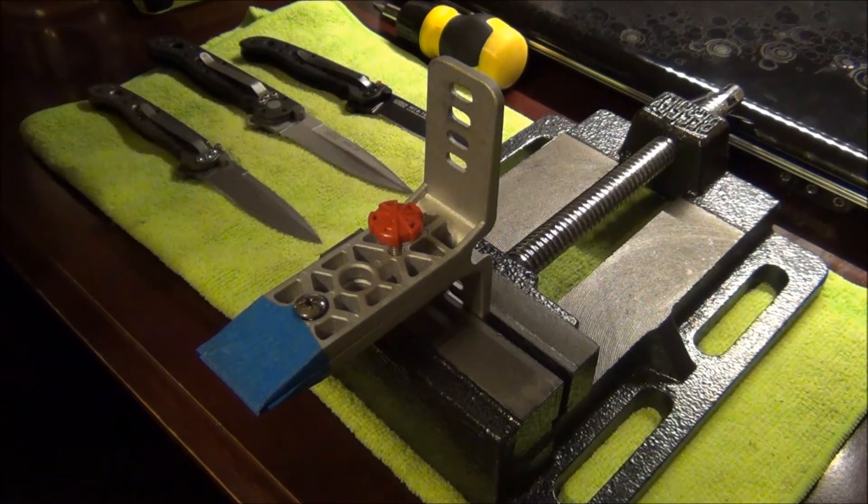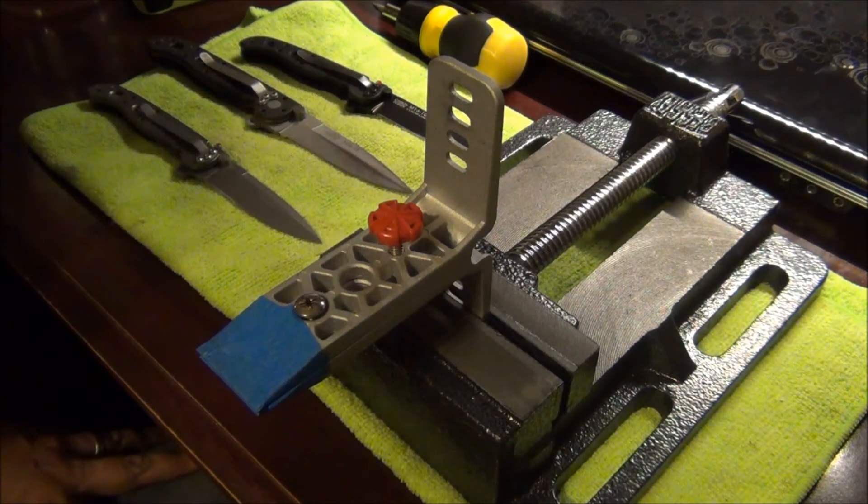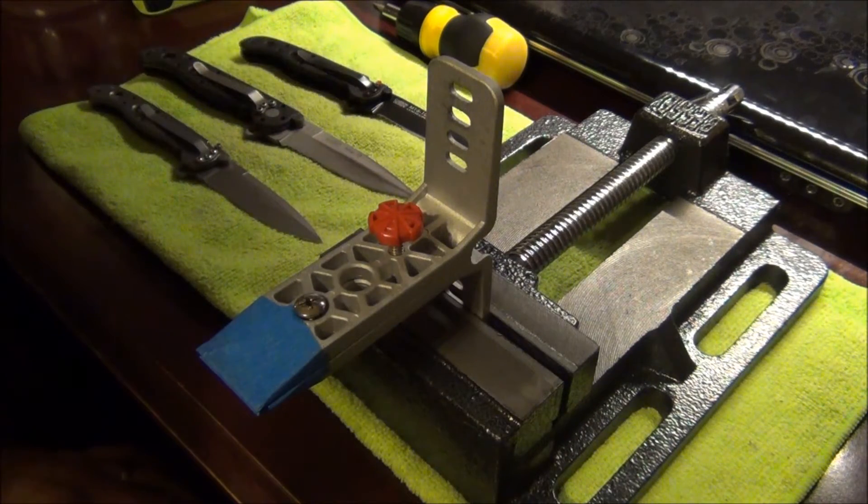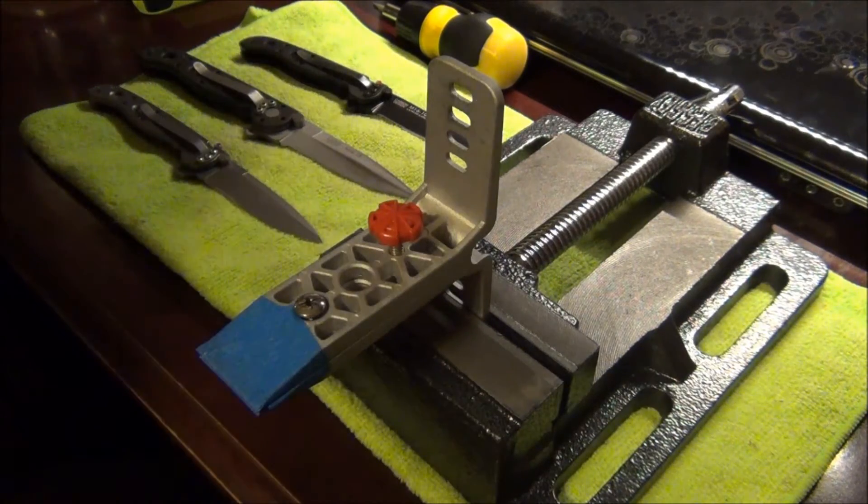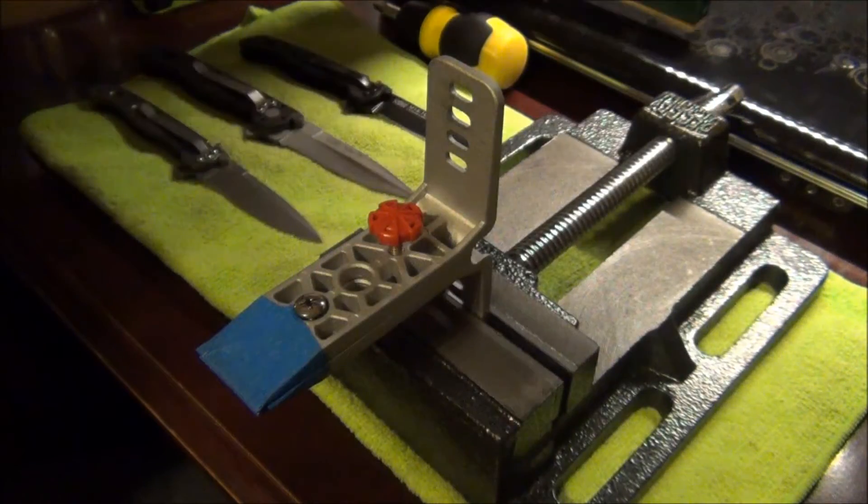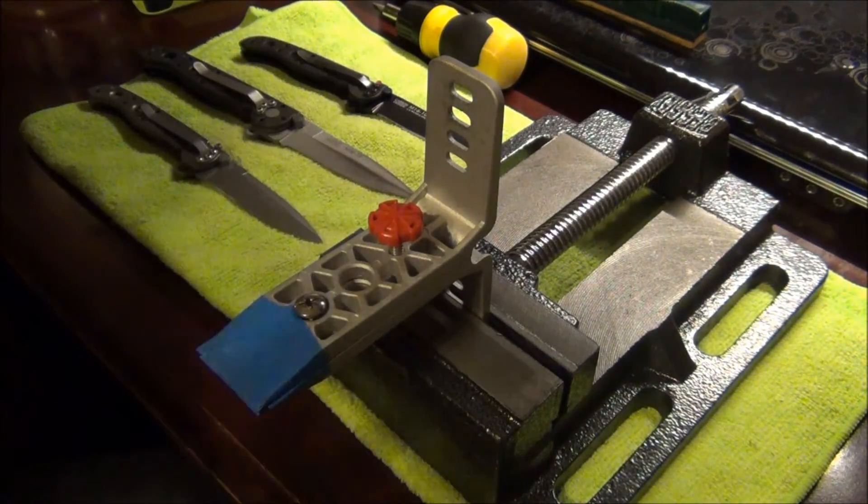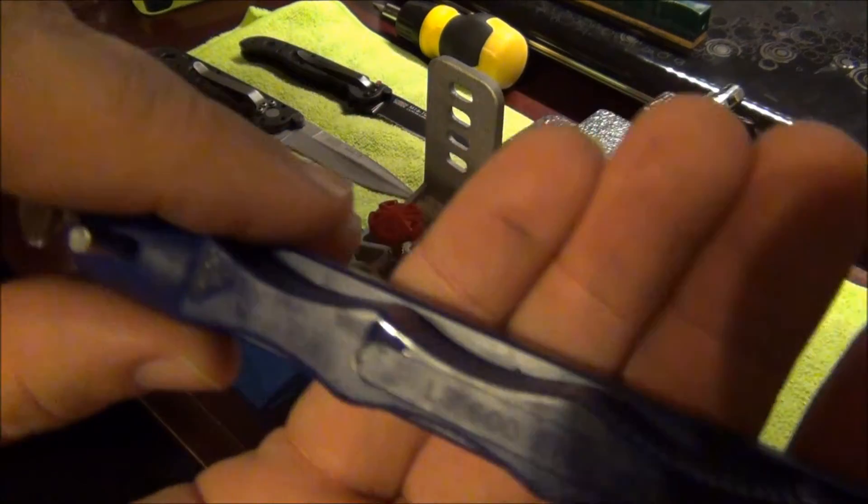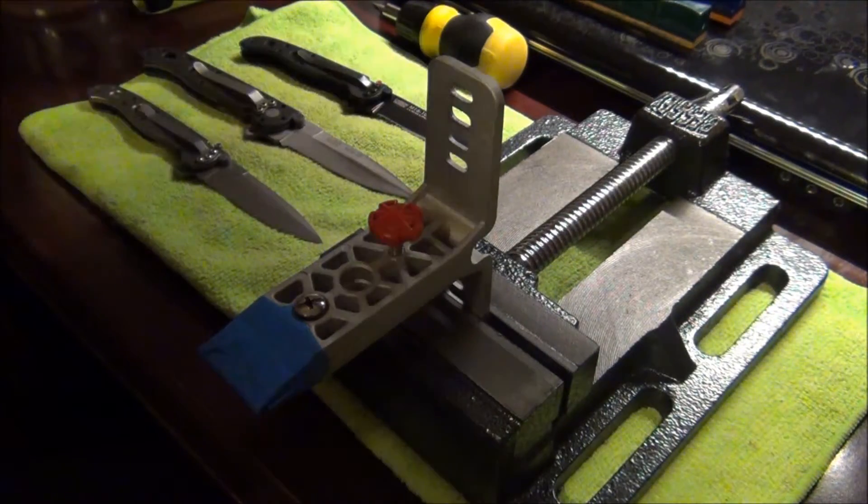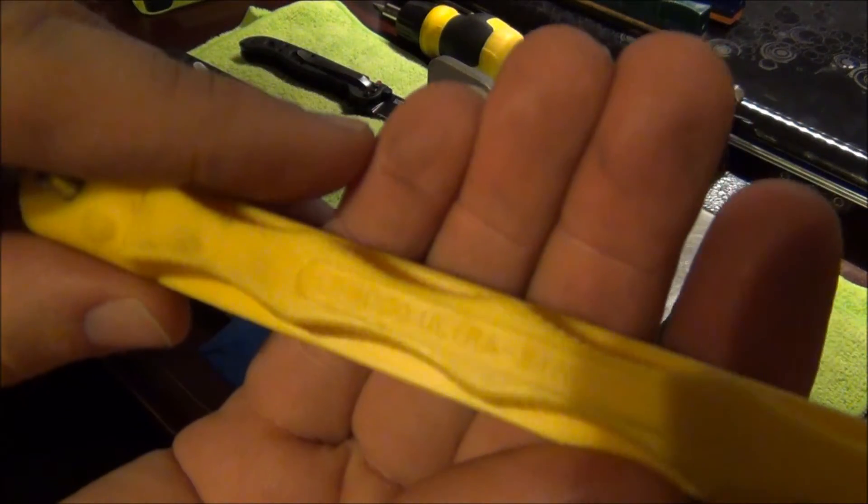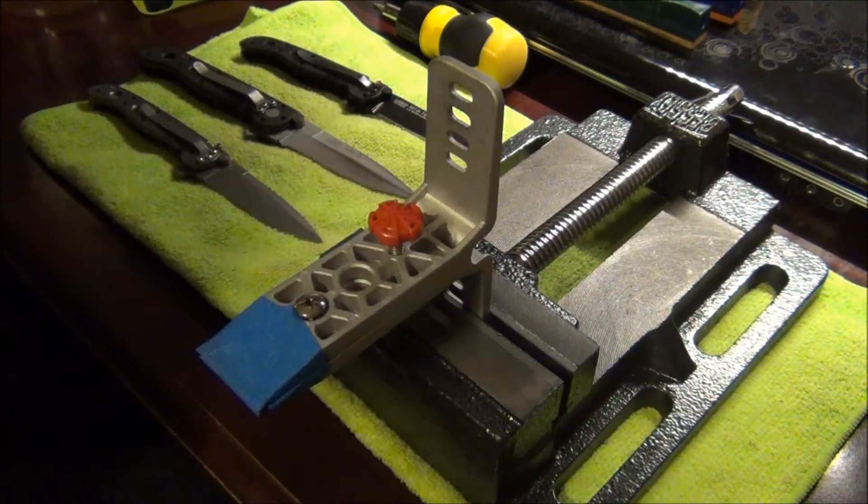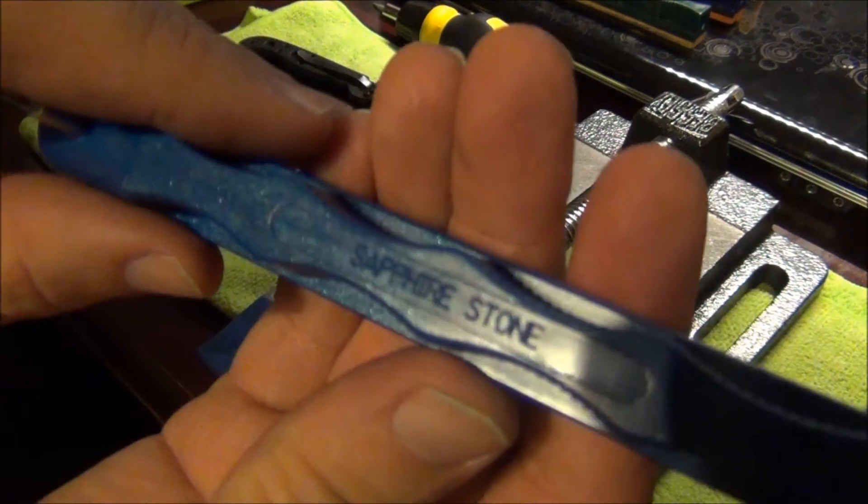What I've been using on these is I went back to the coarser stones. I started with the medium stone, actually with one of these I started with the coarse stone, and then I went medium, and then I went fine which is the 600 grit, and then I went down to the ultra fine which is the 1000 grit.